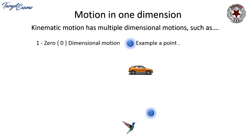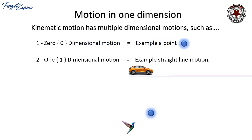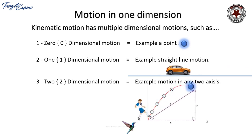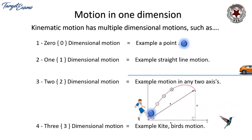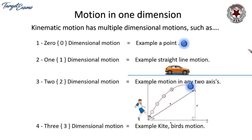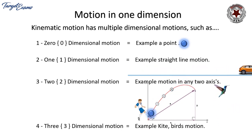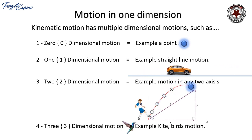Kinematic motion has multiple dimensional motions. Zero-dimensional motion: a point with no dimensions. One-dimensional motion: straight-line motion, such as a car on a straight road. Two-dimensional motion: motion in any two axes — x-y, y-z, or z-x — like a football being kicked, gaining height on the y-axis and moving forward on the x-axis. Three-dimensional motion: examples include kites and birds, which can move right, left, up, and down.